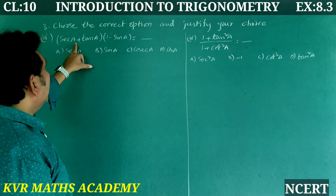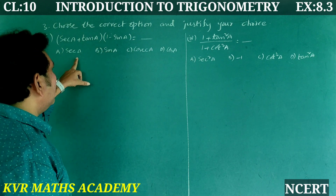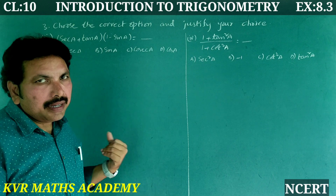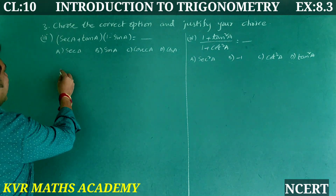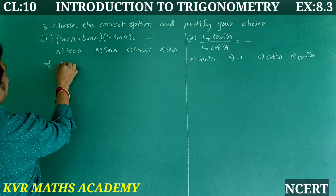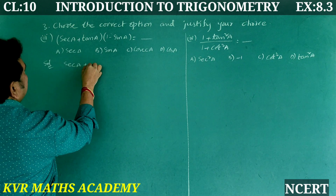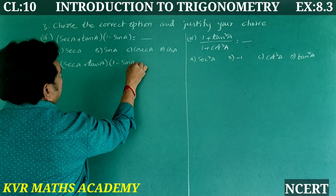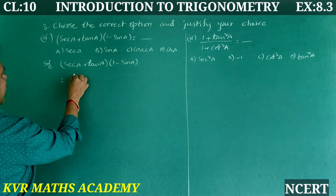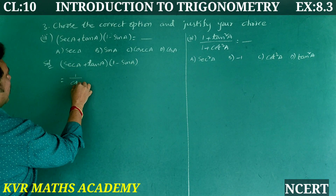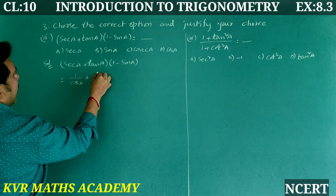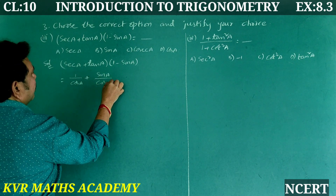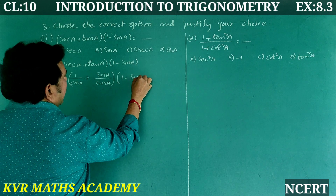Third one: (sec A + tan A)(1 − sin A) is equal to — options: sec A, sin A, cosec A, cos A. Solution: sec A + tan A can be written as 1/cos A + sin A/cos A, which gives (1 + sin A)/cos A. So the expression becomes (1 + sin A)/cos A × (1 − sin A).